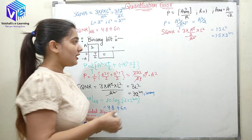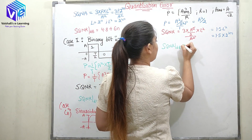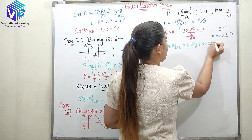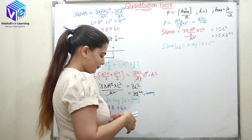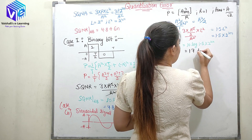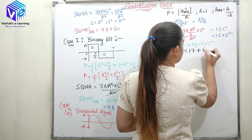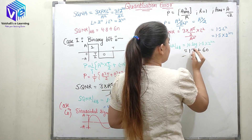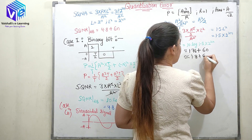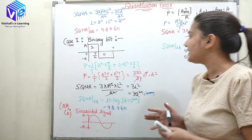Converting SQNR to dB for the sinusoidal case: SQNR in dB is 10 log of 1.5 times 2 raised to power 2N. This value comes out to approximately 1.76, so it is approximately 1.8 plus 6N.